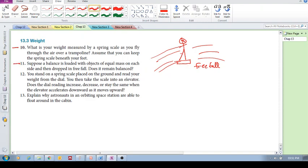So number 11... No, I'm interested in 12. You stand on a spring scale placed on the ground and read your weight. So there you are again, constantly measuring your weight. You measure it and you get a certain weight, a certain reading.